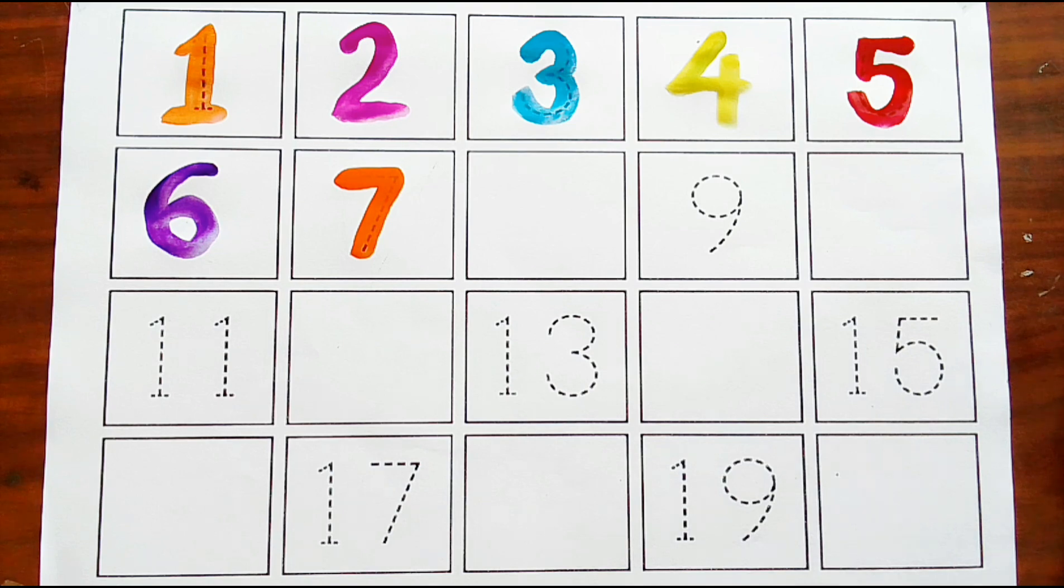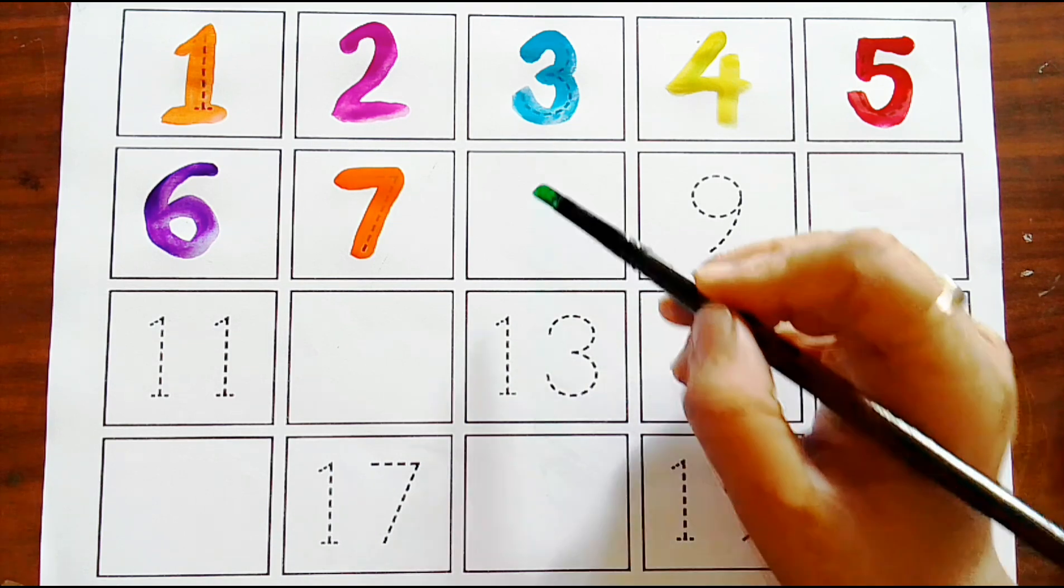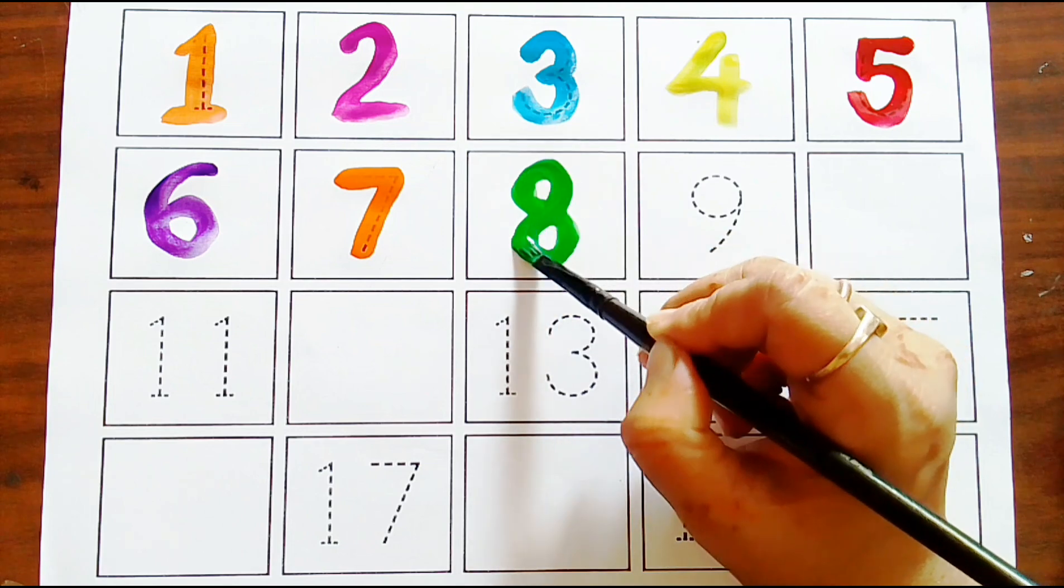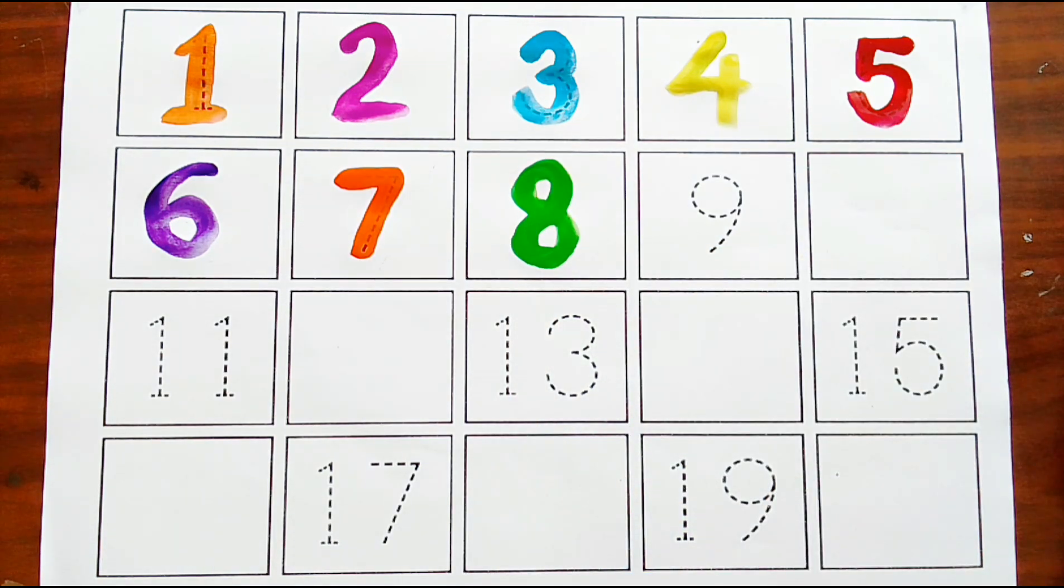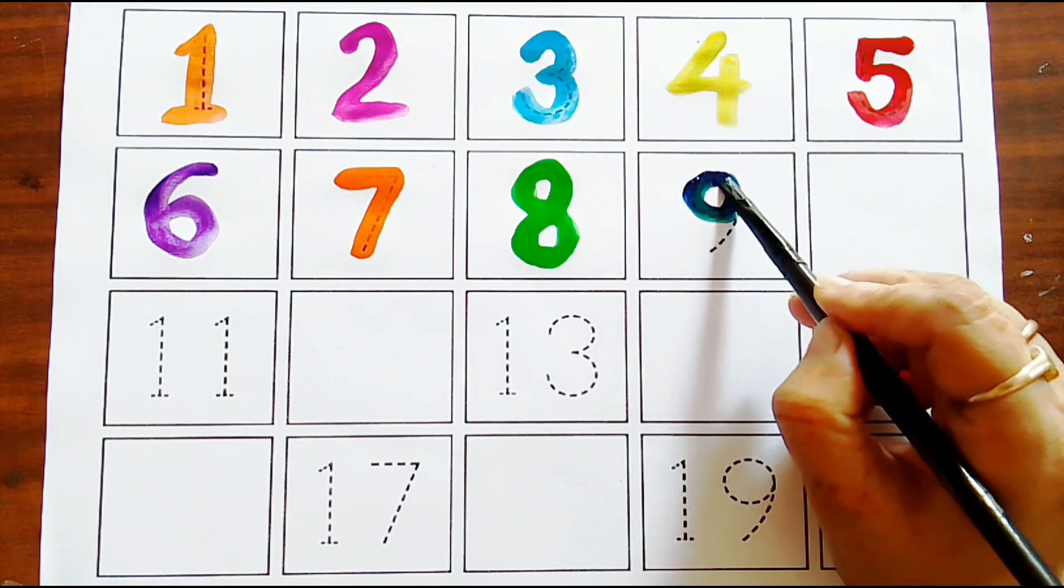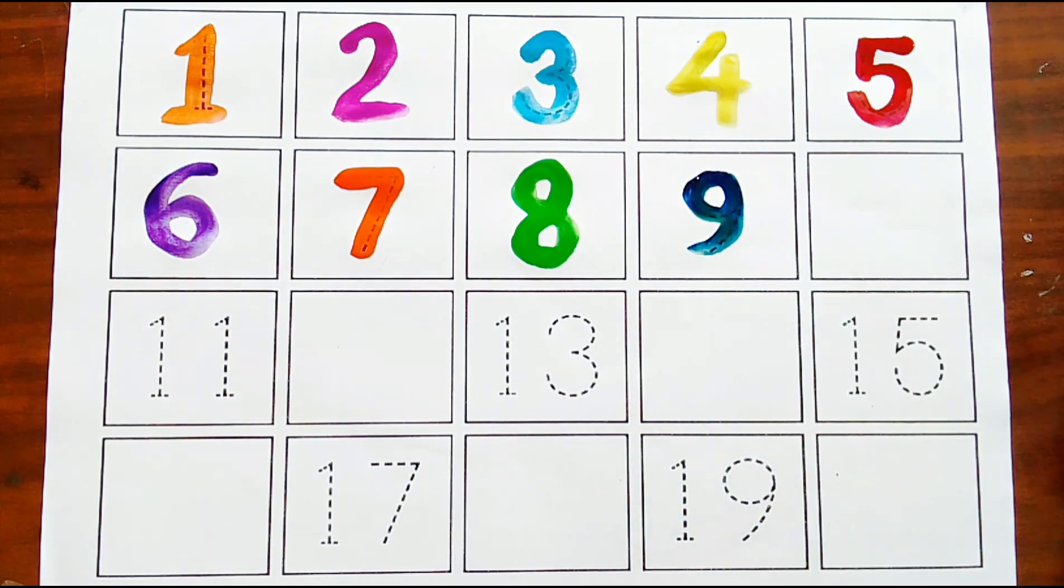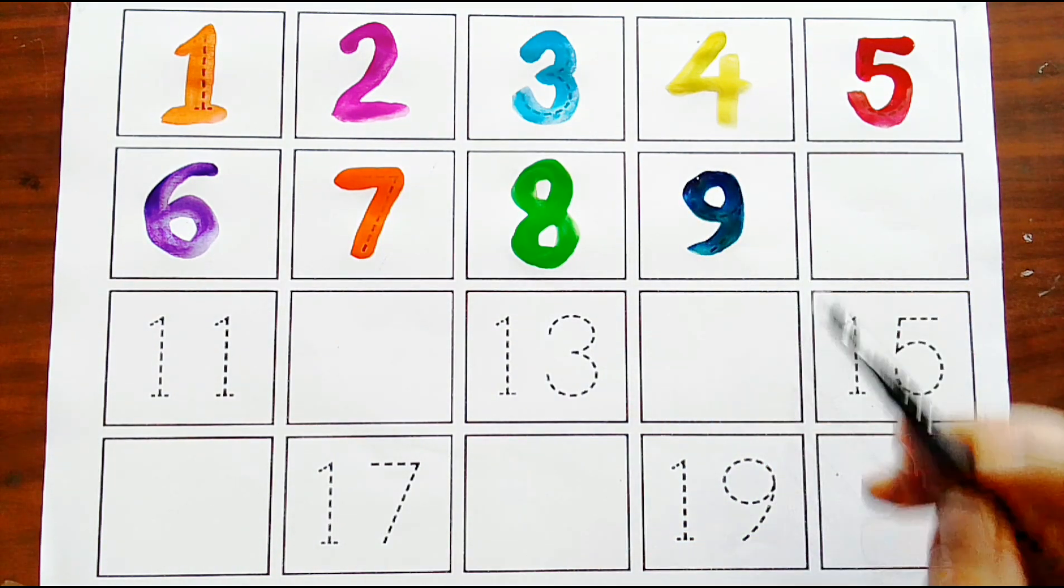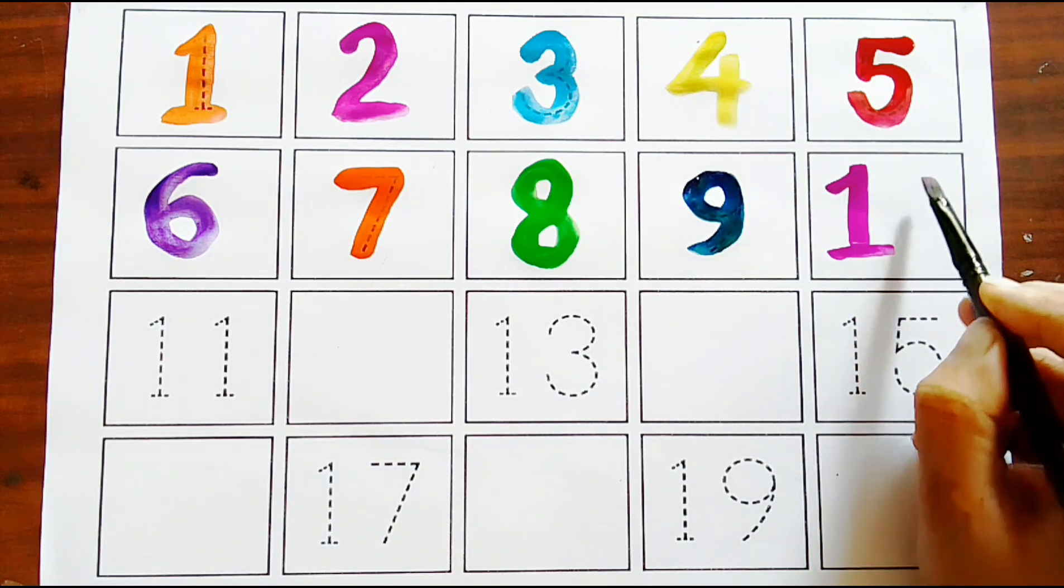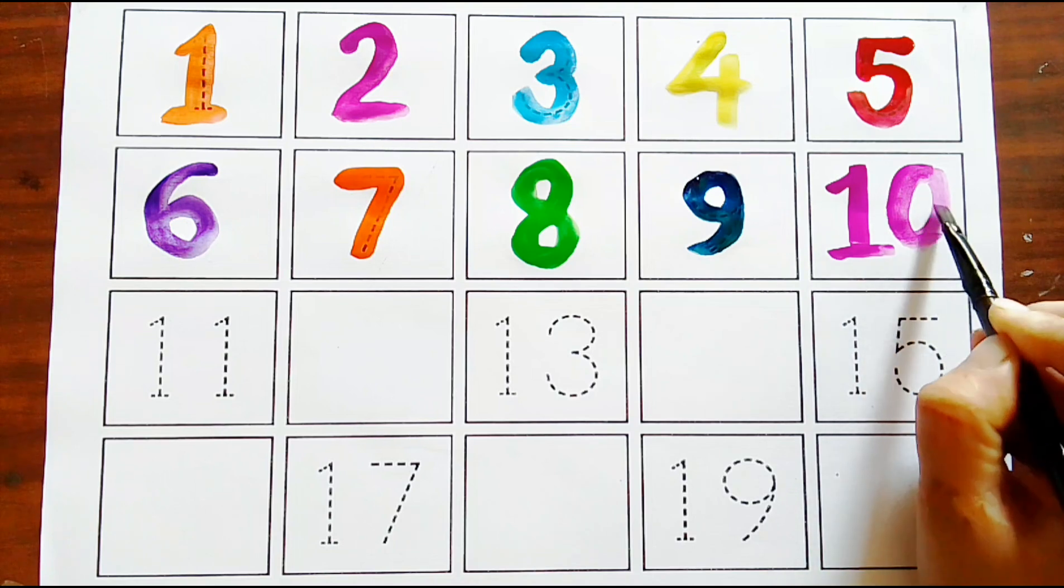Missing number eight, green color. Eight, navy blue color. Nine missing number. Ten, purple color. One zero, ten.